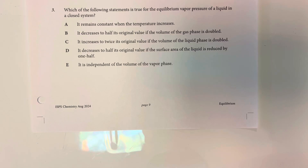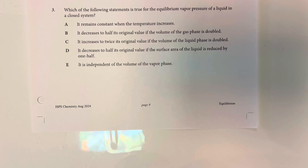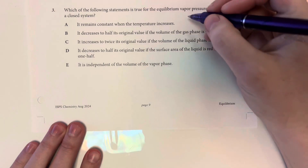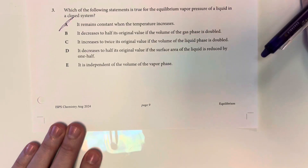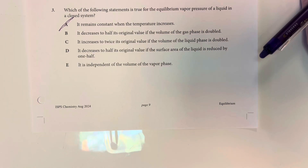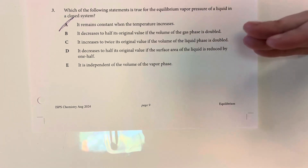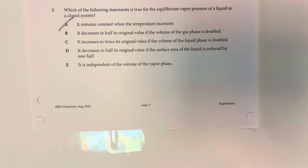Which of the following statements is true for the equilibrium vapor pressure of a liquid in a closed system? Option A says vapor pressure remains constant when the temperature increases. If I increase the temperature, I increase the overall energy of the liquid molecules, therefore increasing the amount of molecules that have enough energy to escape from liquid to gas. So that is not constant — option A is incorrect.